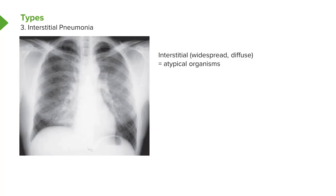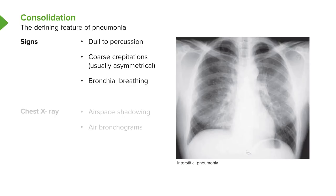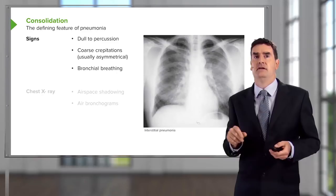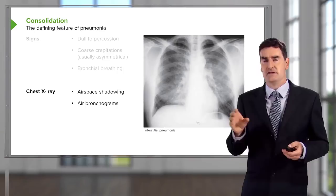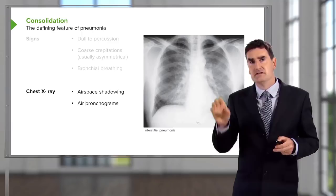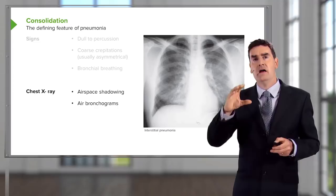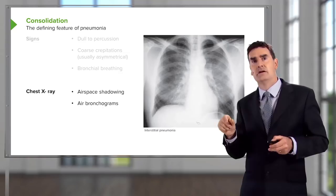Pneumonia can be detected clinically. The area of consolidation will be dull to percussion, and on auscultation there will be crackles and potentially bronchial breathing. The chest X-ray shows airspace shadowing with white patches in the affected area, and occasionally what we call air bronchograms — where the bronchus passing through the consolidated lung is delineated by the alveolar consolidation on either side, showing up as a black tube going through a consolidated area.